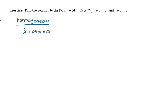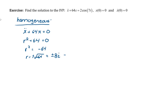Our typical method is to write the characteristic polynomial by replacing the derivative terms with R — so don't put an R on the 64 term. This equation can be solved by moving the 64 to the right-hand side and taking a square root, which gives two solutions: plus or minus 8i. We recognize that the real part of our solution is 0 and the imaginary part is 8.